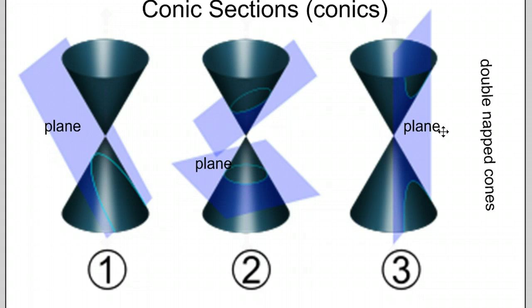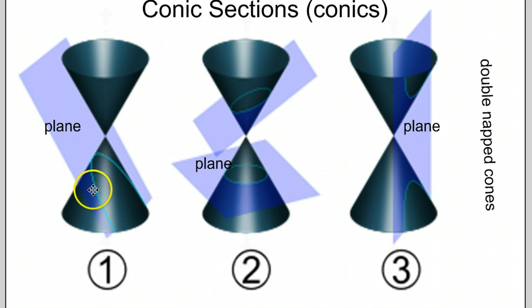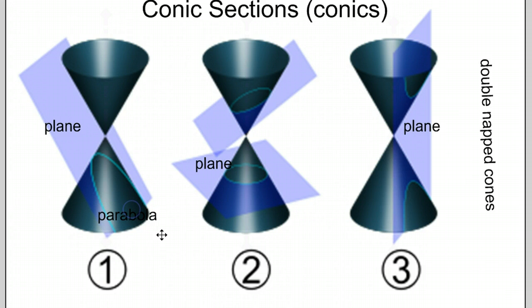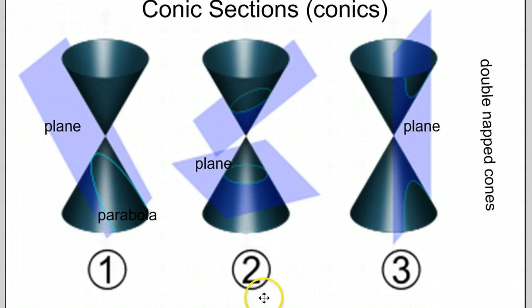What happens when you intersect a plane with a double-naped cone? Well, it depends on how you make the intersection. If you intersect it so that the plane passes through one of the napes at the same slant, what you have is called a parabola — and you guys have seen that curve shape more than once. If you intersect it so that the plane is parallel to the base of the cones, you have what's called a circle, which again you're familiar with as well.